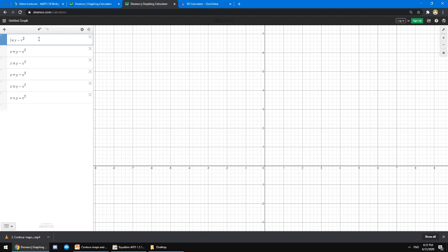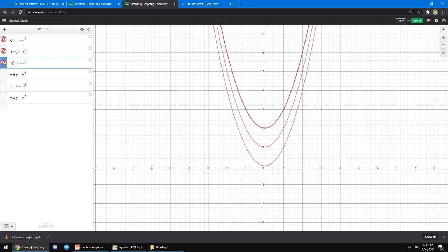For instance, 0, 1, and 2. And so, this is our contour map consisting of level curves which are parabolas. Again, we need to label our level curves.